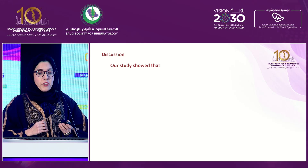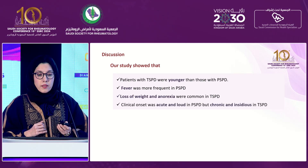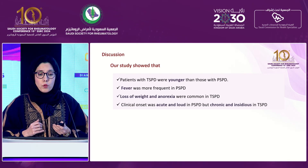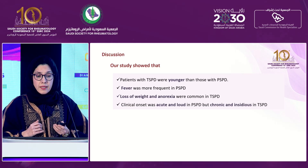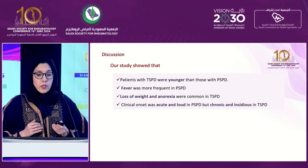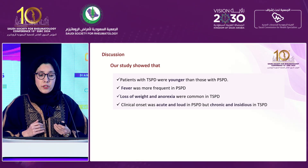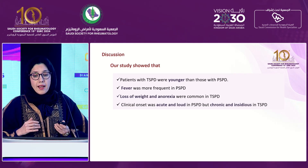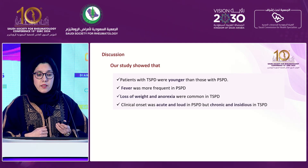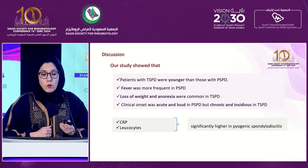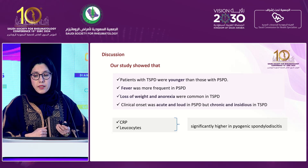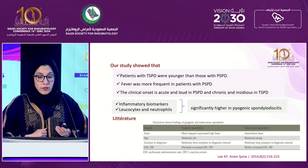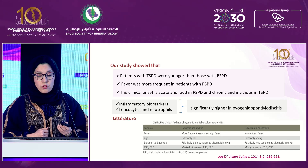To summarize, patients with tuberculous spondylodiscitis were younger than those with pyogenic spondylodiscitis. Fever was more frequent in pyogenic spondylodiscitis, while weight loss and anorexia were common in tuberculous patients. Clinical onset was acute in pyogenic spondylodiscitis but chronic and insidious in tuberculous spondylodiscitis. CRP and leukocytes were significantly higher in pyogenic patients. As demonstrated by this table, our findings were in line with literature data.